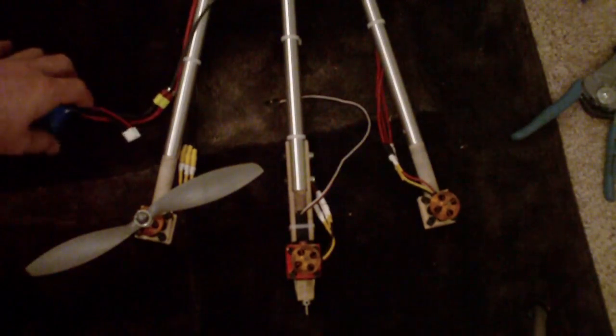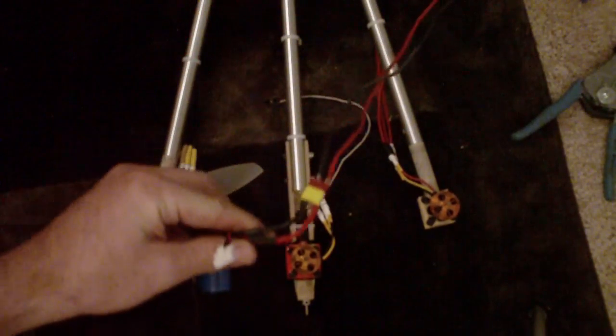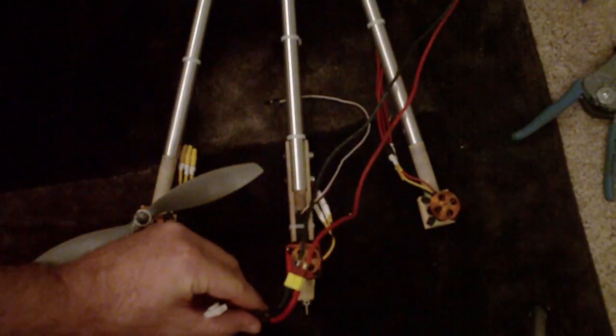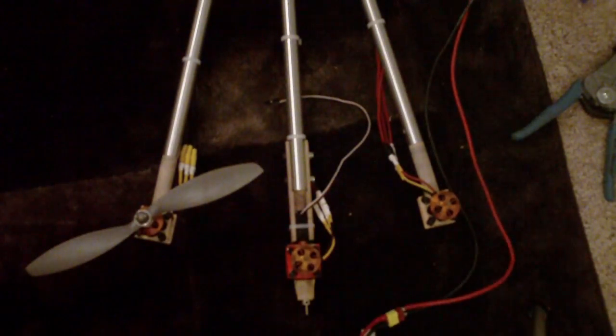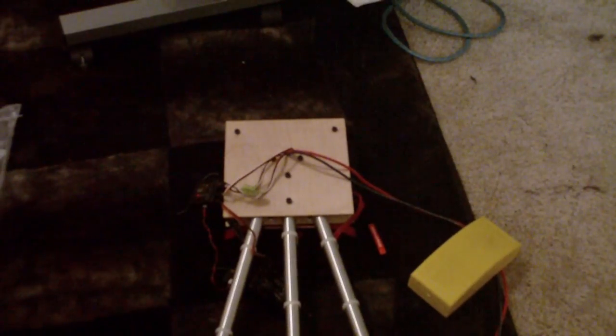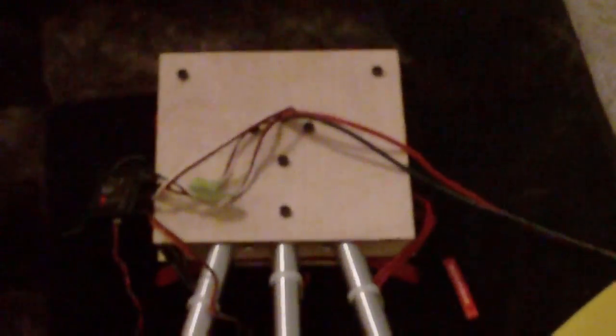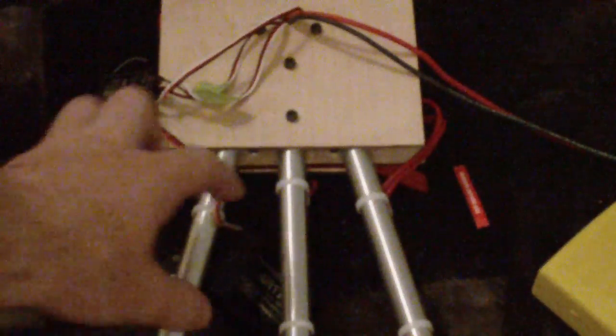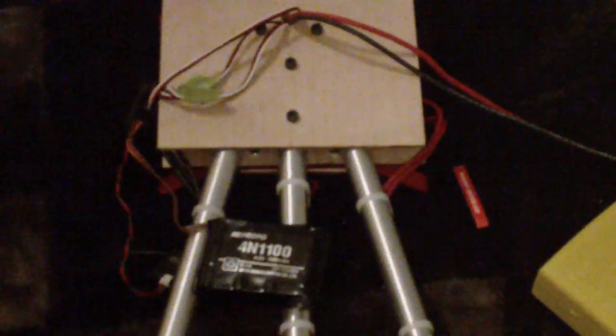What I did is I took all three speed controllers and plugged them into these two wires which are running to a battery. I've also got my receiver all bound up and the receiver is plugged into an external receiver pack.